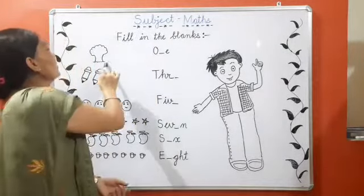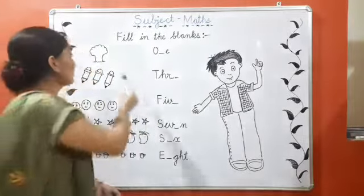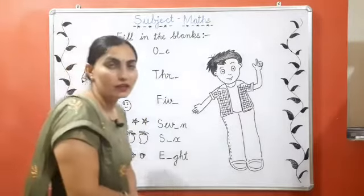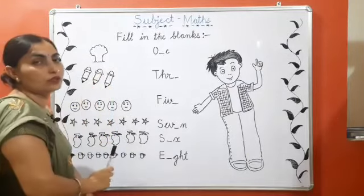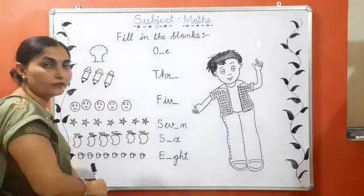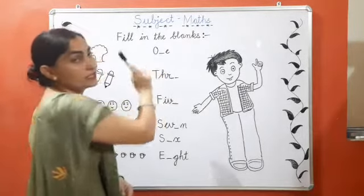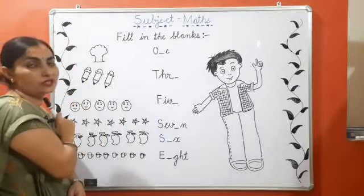Or ma'am ne yahaan par yye objects banay hai, woh kis liye? Que aapko ek clue mil jaye, que ma'am ne yahaan par koon si spelling write ki hai. Aap isko pehle count karo ghe. Firstly, we will count the object, and then fill the space. Let's count. Start kar hai.